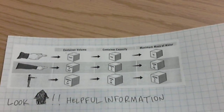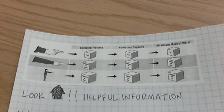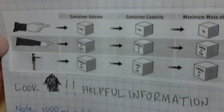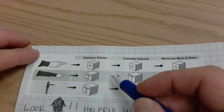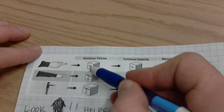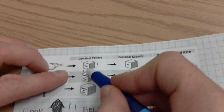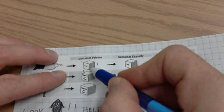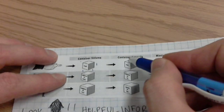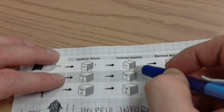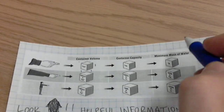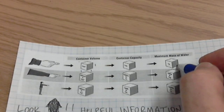Now let's talk about some of the relationships between volume, capacity, and mass. Looking at the diagram: a cube that is one centimeter by one centimeter by one centimeter has a volume of one centimeter cubed. If that cube were hollow, its capacity would be one milliliter, and the maximum mass it could hold would be one gram.